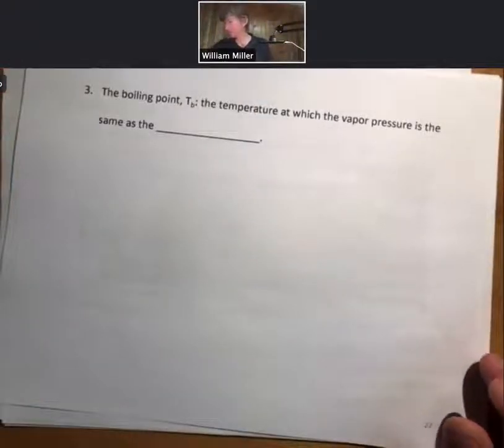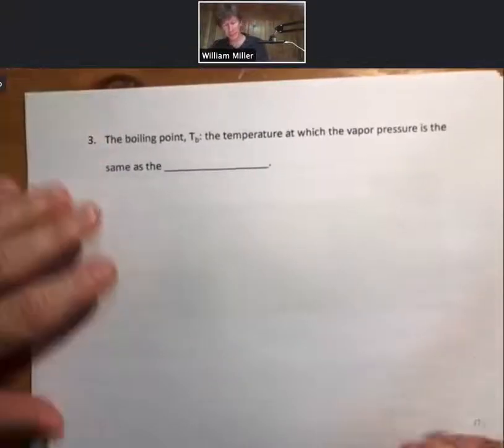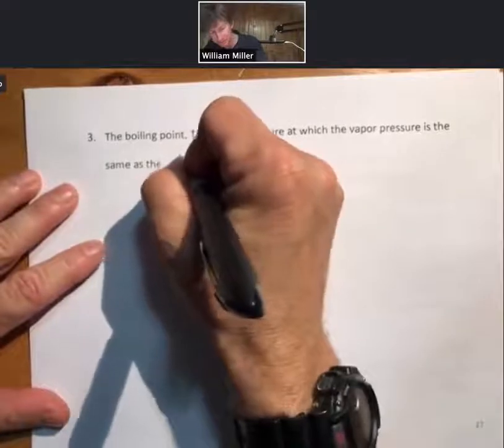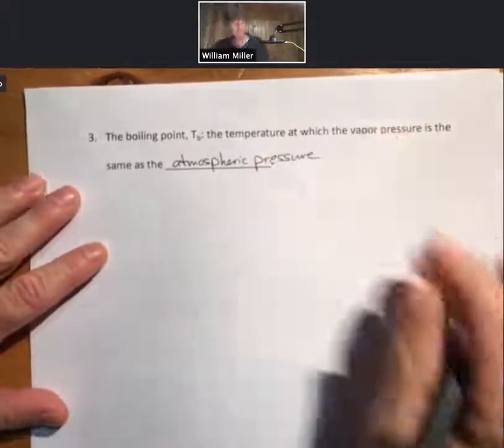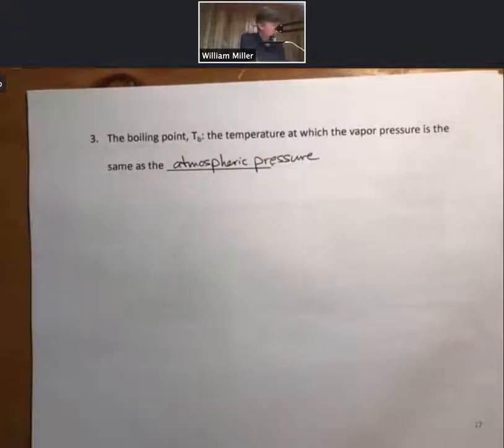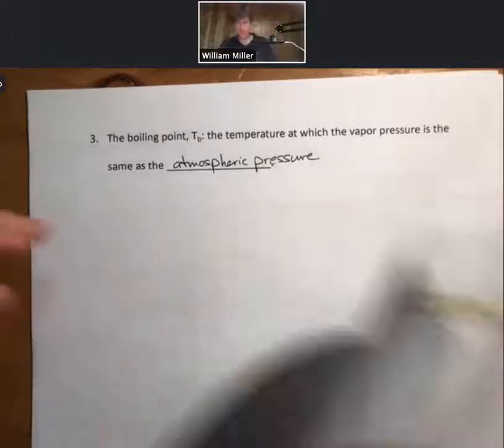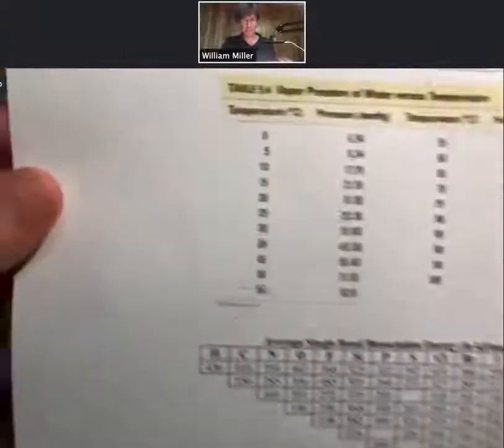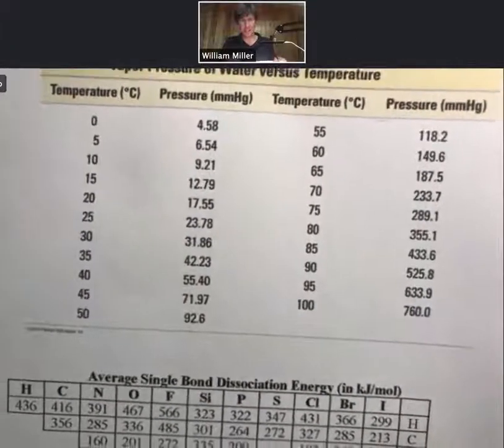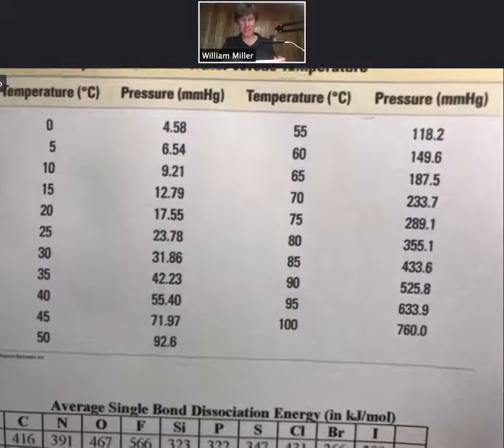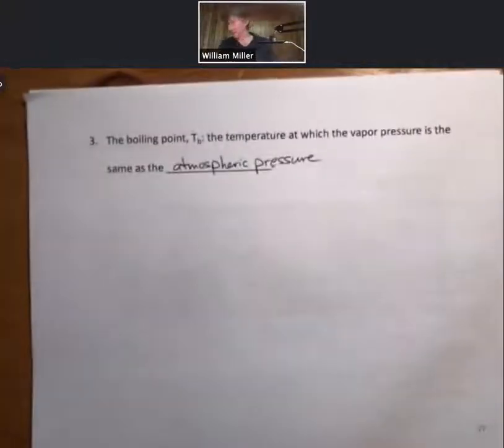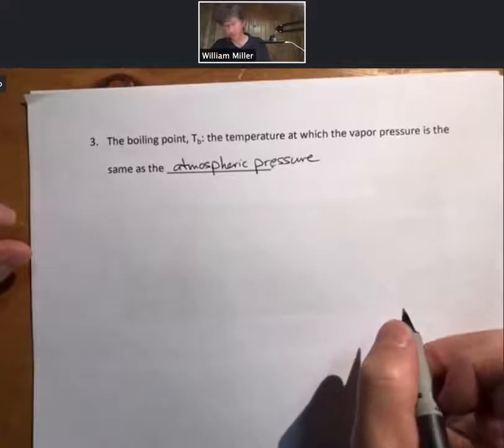Now, the boiling point is the temperature at which the vapor pressure is the same as the atmospheric pressure. We can look at our table. If we look at our table of values here, you can see that at 100 degrees Celsius, the vapor pressure is equal to the atmospheric pressure of 760 millimeters of mercury, which is one atmosphere.